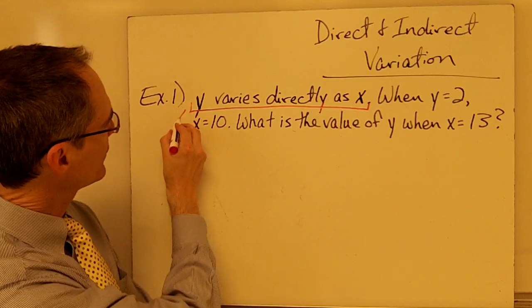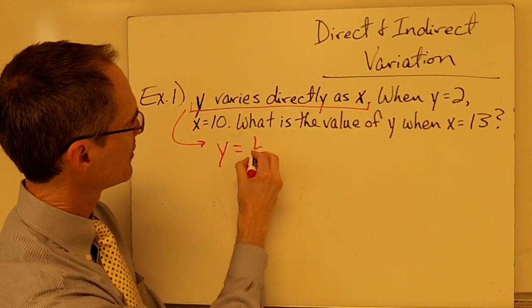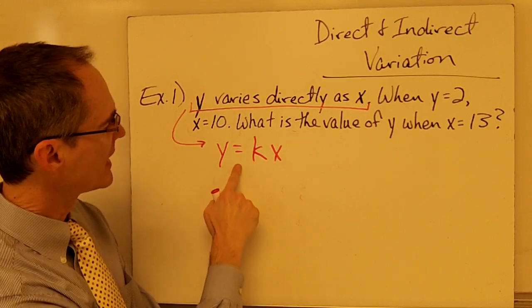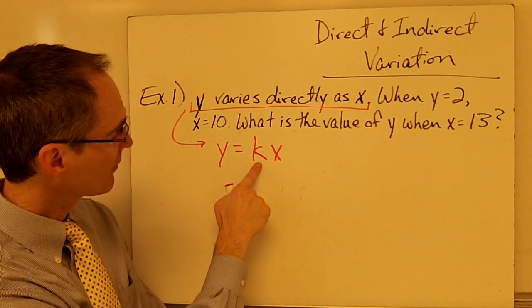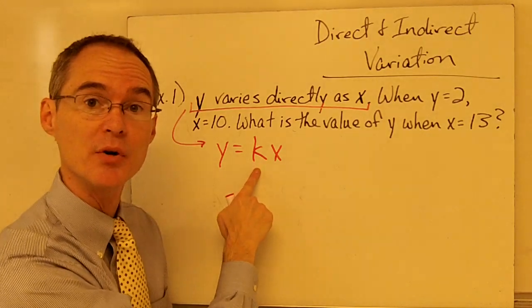y varies directly as x, what that means, it essentially means this: y equals some number times x. And the first thing we want to do is to figure out what this number is.